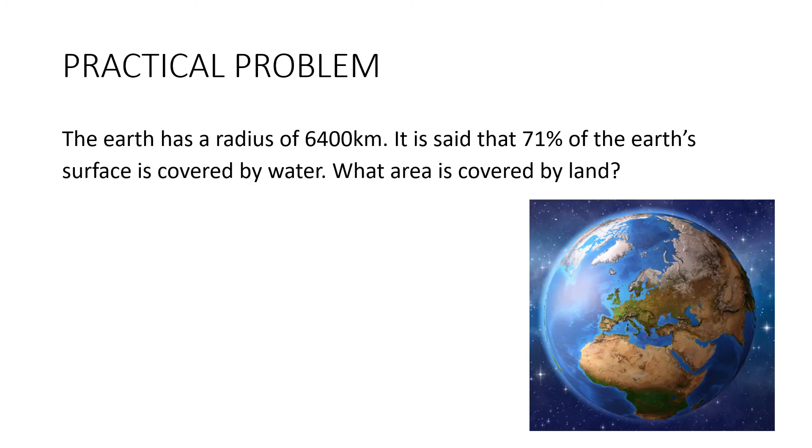And we'll finish with a practical problem. The earth has a radius of 6,400 kilometers. It is said that 71% of the earth's surface is covered by water. What area is covered by land? Let's start with the formula. And r is 6,400. So let's substitute that in. And when we put that in the calculator, we get a very accurate answer. I'm going to keep all of that accuracy at this point, but then we'll round it quite severely at the end. So our area is 514,718,540 kilometers squared.